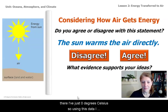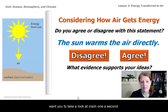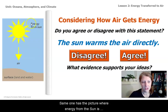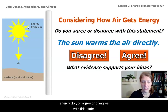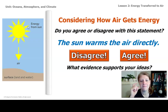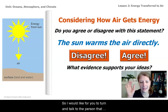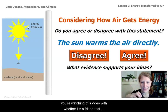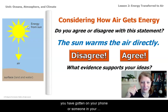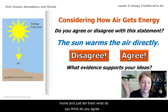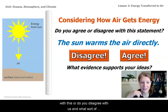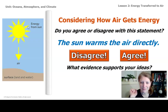Using this data, I want you to take a look at claim one a second time. Claim one has the picture where energy from the sun is heating the air directly. Considering how air gets energy, do you agree or disagree with this statement: the sun warms the air directly? Turn and talk to the person you're watching this video with — whether it's a friend on your phone or someone in your home — and tell them what you think. Do you agree or disagree, and what sort of evidence supports your idea? Pause the video for a moment and share your ideas.